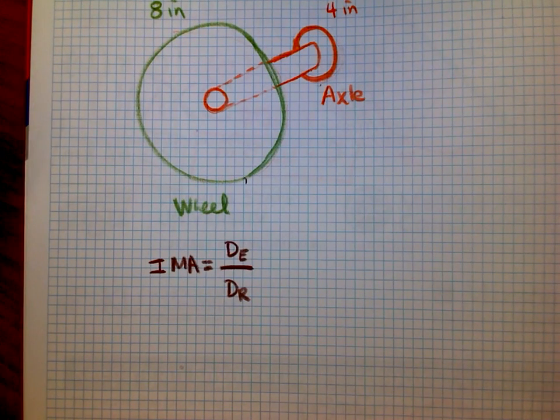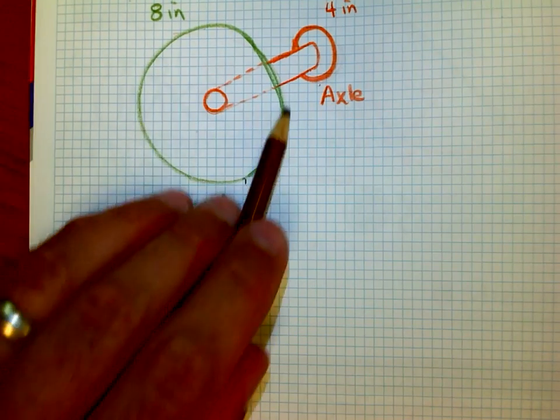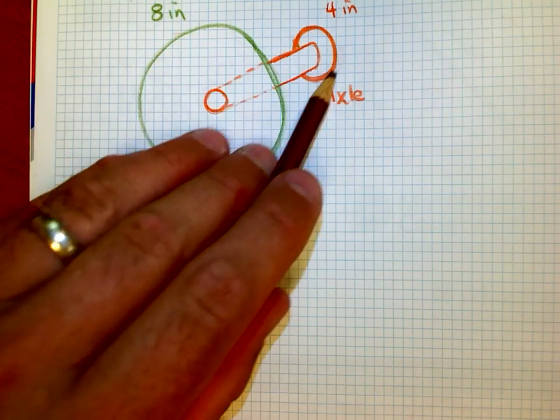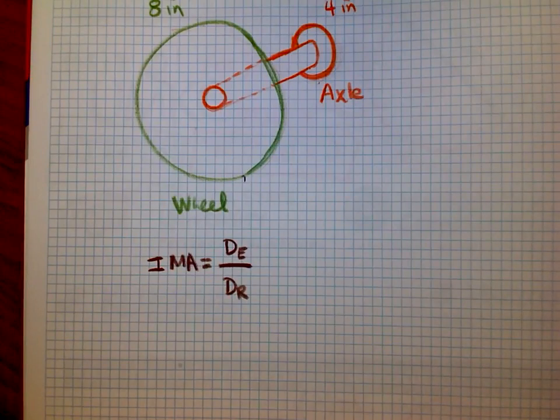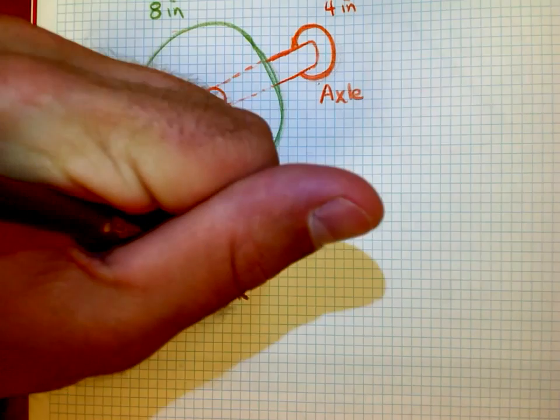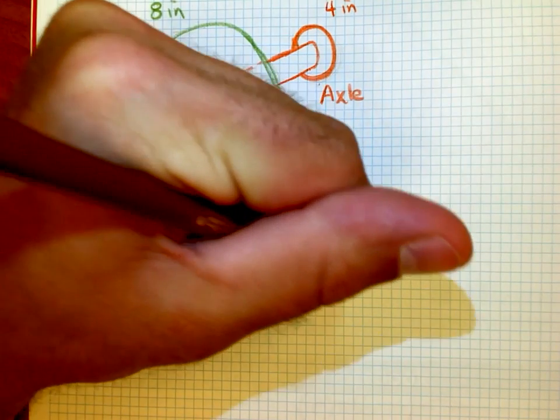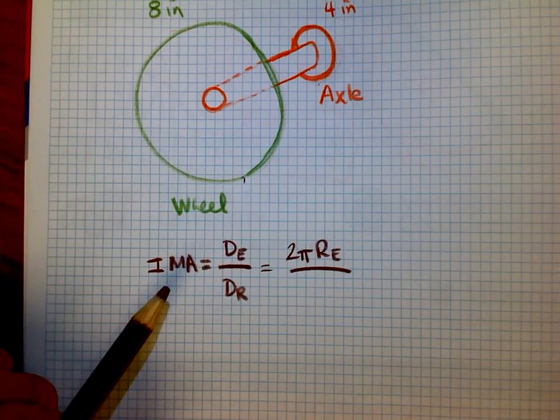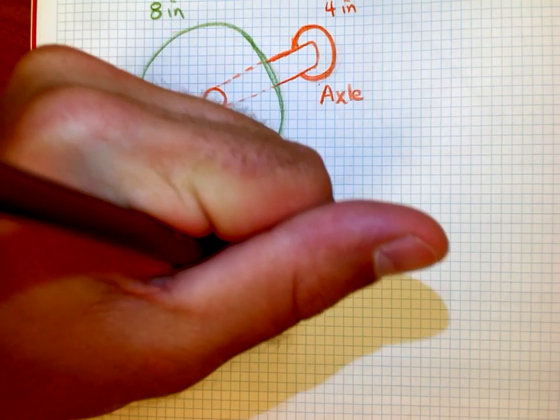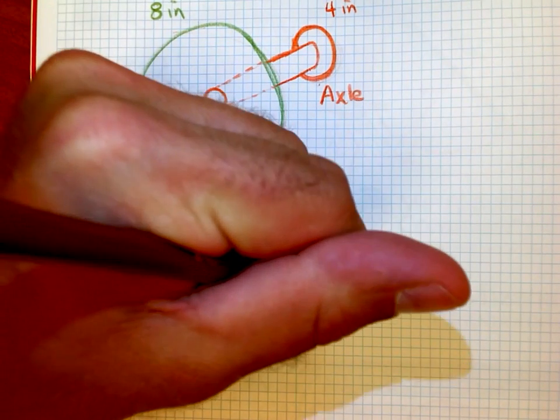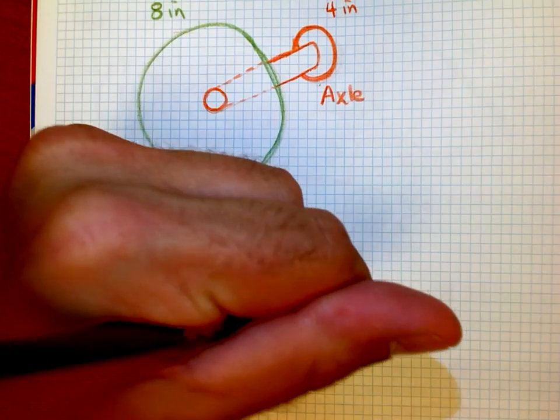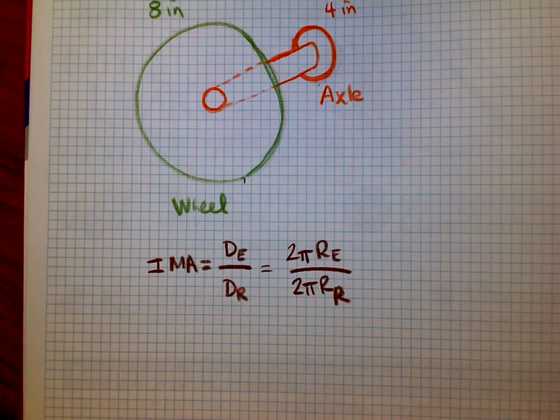In this case, we're going to talk about if I spun the wheel one time here and one time here, we're going to compare those. So really, we're talking the circumference. We have a formula for circumference. It's 2π times the radius of the effort arm or the effort wheel or axle. And then the circumference for the little one is going to be 2π times the resistance, the radius of the little guy.